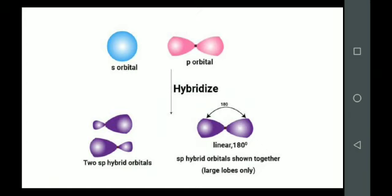The large lobes are arranged linearly with each other — the shorter lobes are not shown here. These two sp hybrid orbitals have an angle of 180 degrees and are linearly arranged with each other. That is why sp hybridization is also known as linear hybridization.